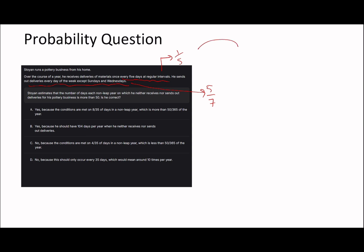That's the number of days each non-leap year in which he neither receives nor sends out deliveries is more than 50. So neither receives nor sends out. So not receiving is going to be the opposite of that, which is four-fifths, and not sending out is two-sevenths. So if he's not doing either of these, remember what we said about probability. The probability of individual events occurring is the probability of each one multiplied together. So four-fifths times two-sevenths, which is eight over 35. So it basically means there's an eight over 35 chance of him every day doing neither of these things. But we have 365 days. So if we multiply this by 365, we get 83.4 days.